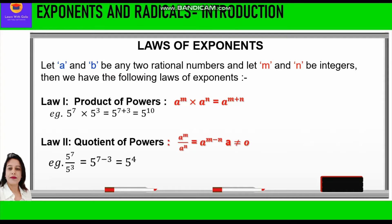The second law of exponents is about quotient of powers, which says a raised to power m upon a raised to power n is equal to a raised to power m minus n, where a is not equal to 0. That means whenever two exponents are divided, the powers are subtracted. For example, 5 raised to power 7 upon 5 raised to power 3 is equal to 5 raised to power 7 minus 3, which is equal to 5 raised to power 4.